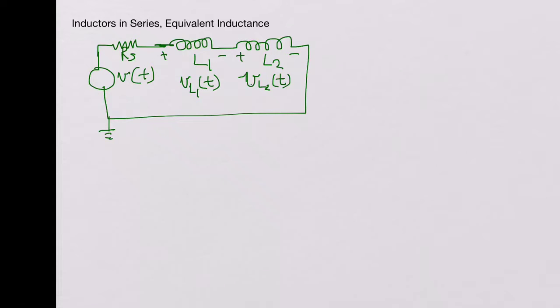And if you look at this, the current flowing through both the inductors is the same, which is I of t. So now we would like to find out the equivalent inductance between these two points here.